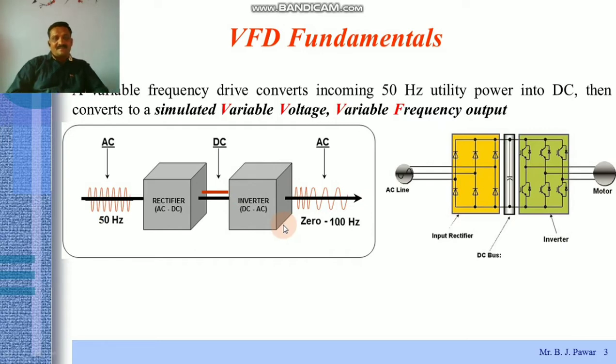Now the question is, why it is converted? Because at the end you will observe the output available is AC in nature and the original input was also AC in nature. Then why these intermediate two blocks are used, why that conversion is done? That conversion is done for this purpose only, that is for variable voltage and variable frequency output. Means what?